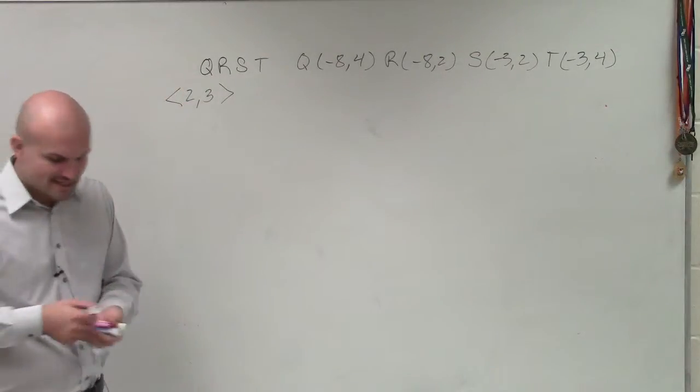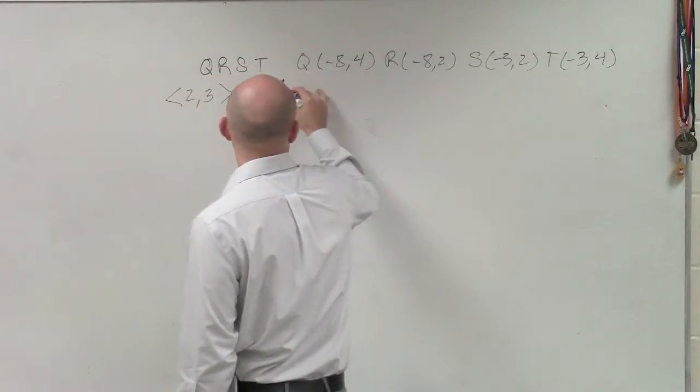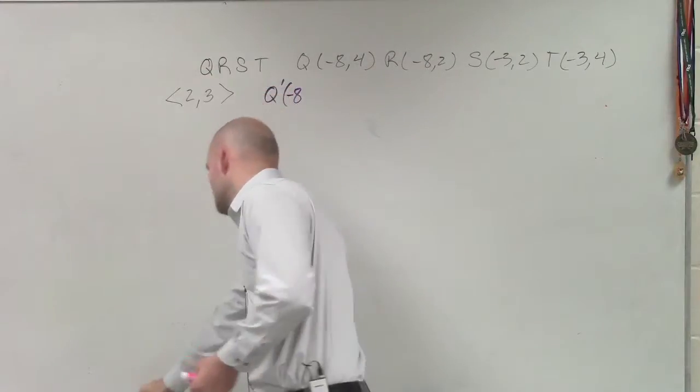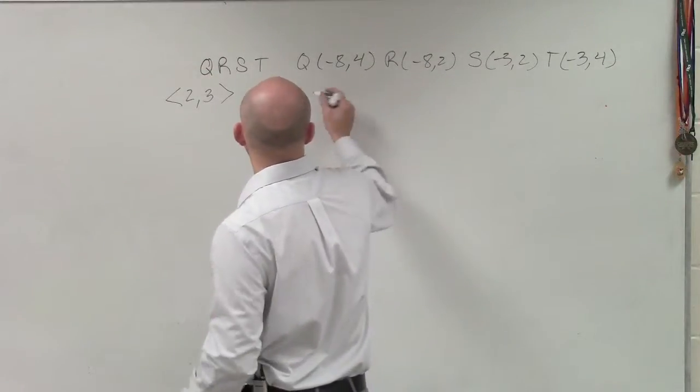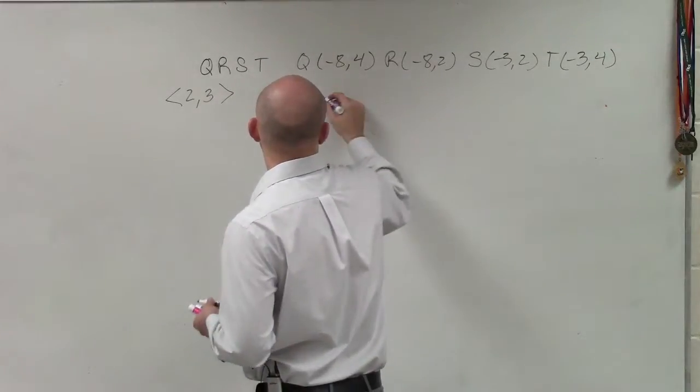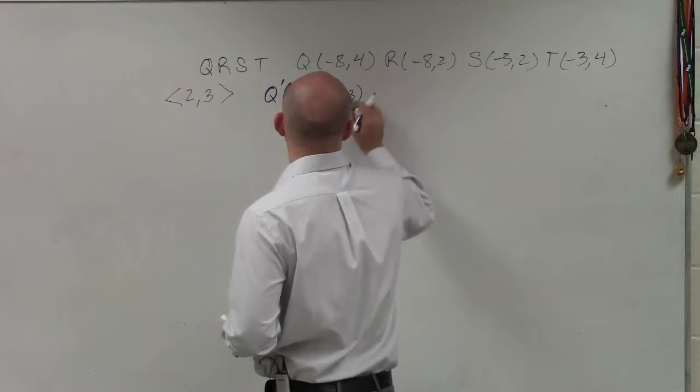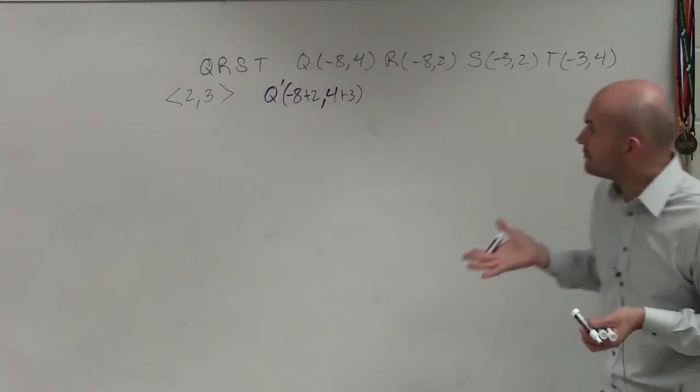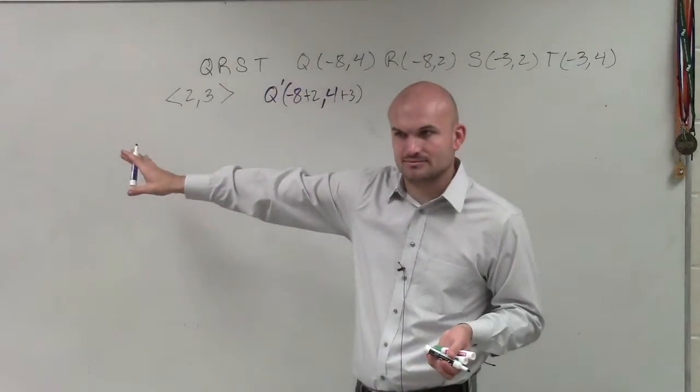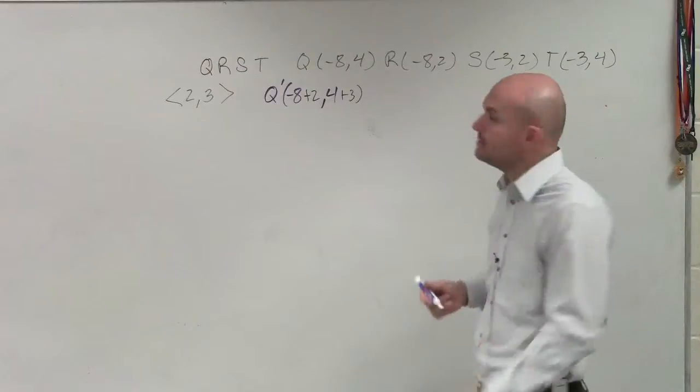So what we're going to do is we're going to take each of our coordinates, Q prime, and now what I'm going to do is just take 8, and I'm going to add 2. And then I'll take 4 and add 3. So you guys see how I take my original points and then I add my transformation vector. It doesn't matter if it's negative or positive. You add those coordinate points.